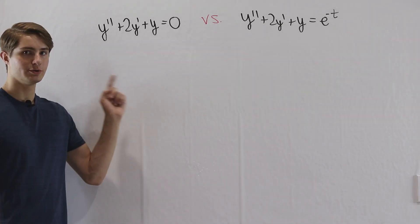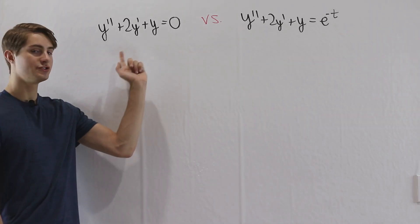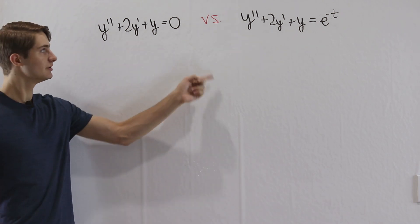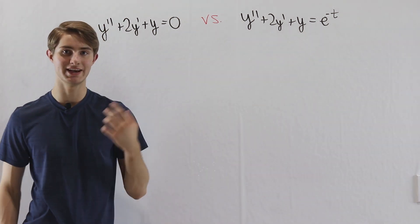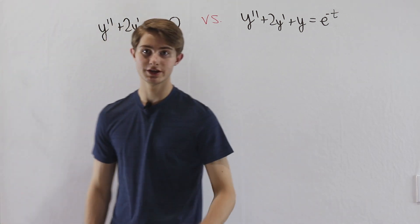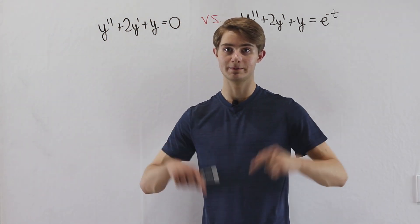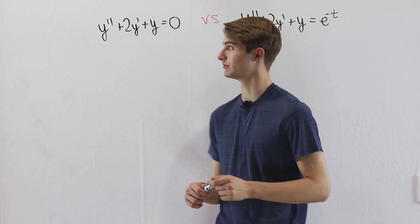So we are going to do another differential equation battle. y'' plus 2y' plus y equals 0 versus y'' plus 2y' plus y equals e to the negative t. You can pause the video and try each of these first and then come back and watch the rest of the video to see the solution.